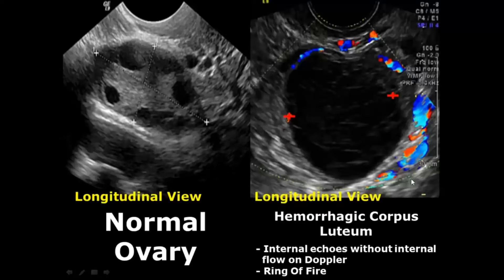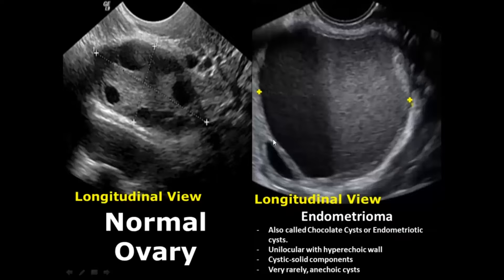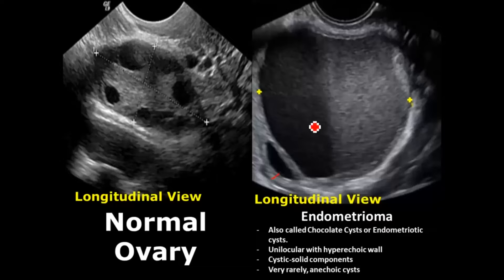A hemorrhagic corpus luteum shows peripheral vascularity — the ring of fire — and internal echoes due to blood products. Endometriomas, also known as chocolate cysts, have a unilocular appearance with thick walls, internal echoes giving a ground glass appearance, and cystic-solid components. The cystic component is slightly lower in echogenicity and the solid component is slightly higher in echogenicity.